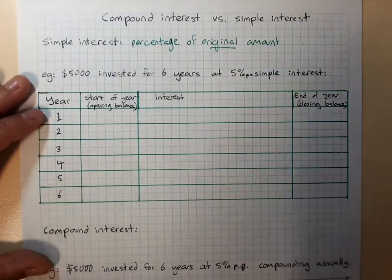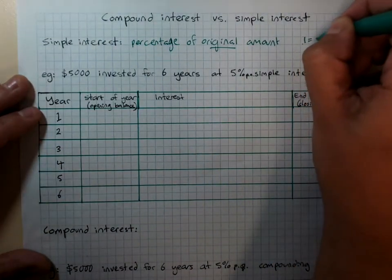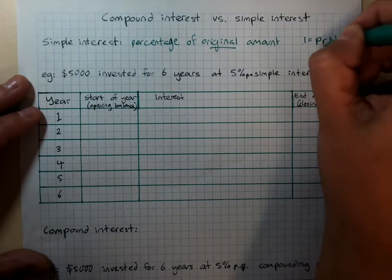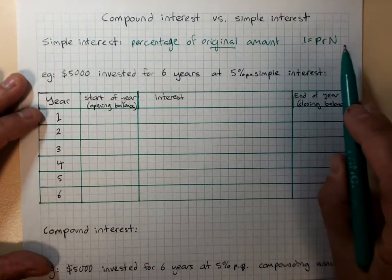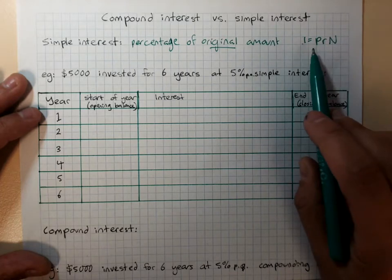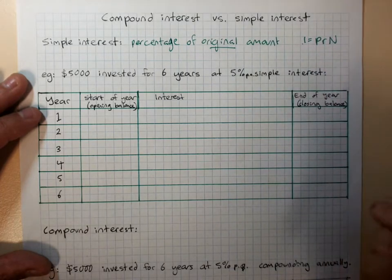The formula for simple interest is I equals PRN when R is a decimal, or some people teach I equals PRN over 100, principle times the rate times the number of years.